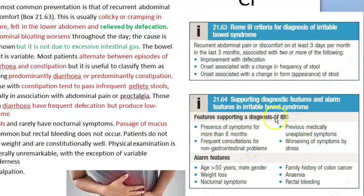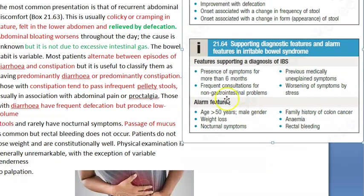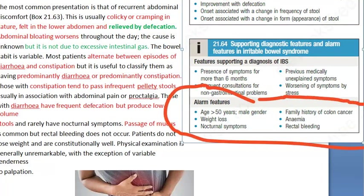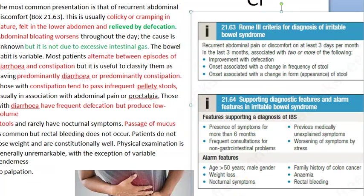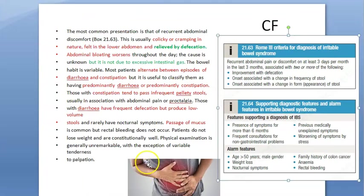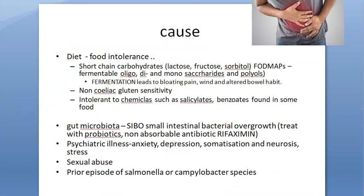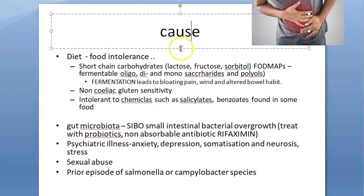If symptoms have been present for more than six months, be careful and look for alarming features. Alarming features include age greater than 50, male gender, weight loss, nocturnal symptoms, family history of colon cancer, anemia, and rectal bleeding. These prompt you to rule out colonic cancer.